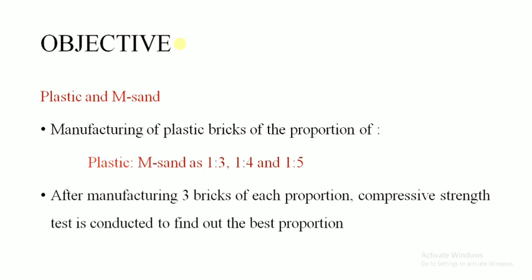Manufacturing of plastic bricks after the proportion of plastic is determined as 2:31, 1:24, and 2:55. After manufacturing 3 bricks of each proportion, tests are conducted to find out the best proportion. Now we will see how plastic bricks are manufactured.